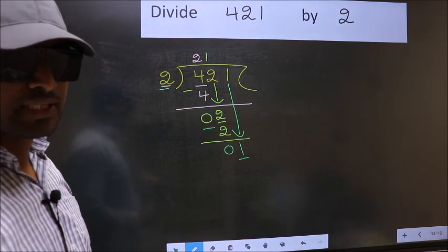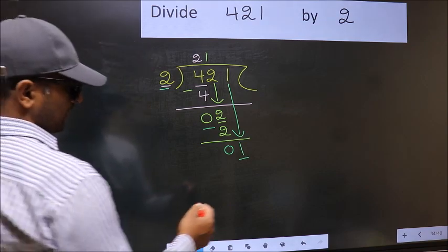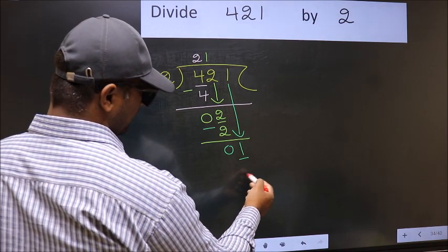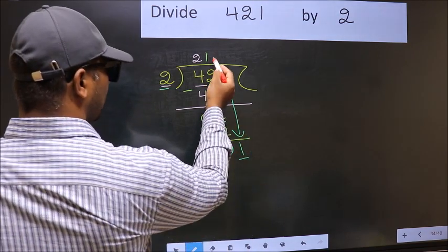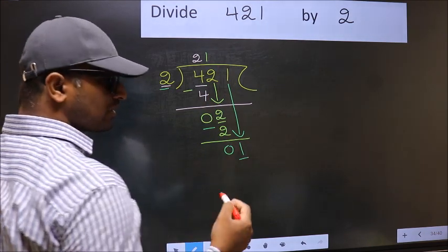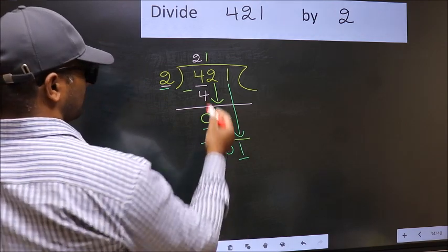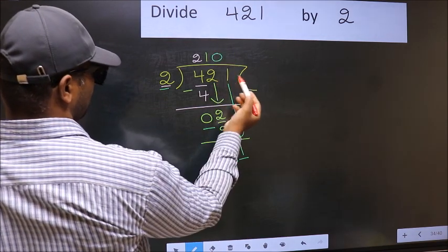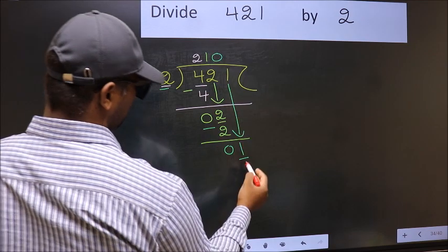Instead, what you should think of is, what number should we write here? If I take 1 here, I get 2. But 2 is larger than 1. So what we do is, we take 0 here. So 2 into 0, 0.